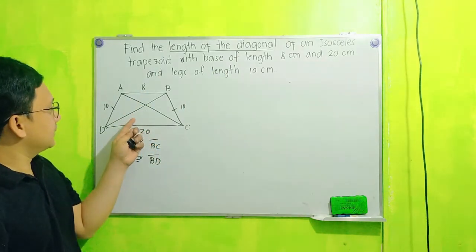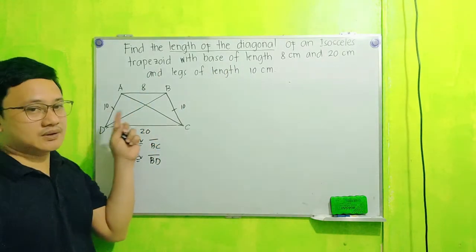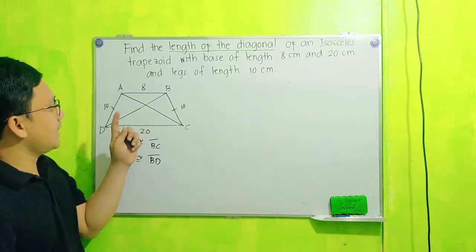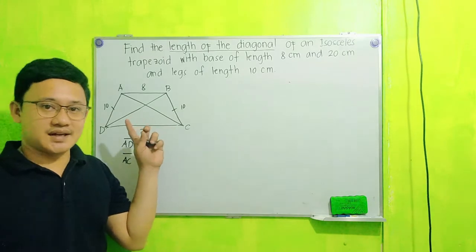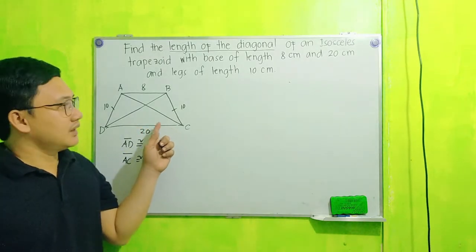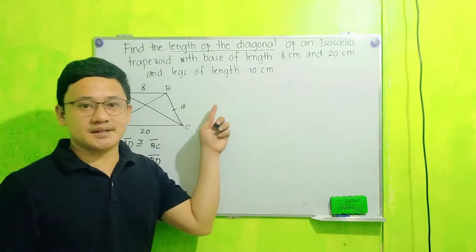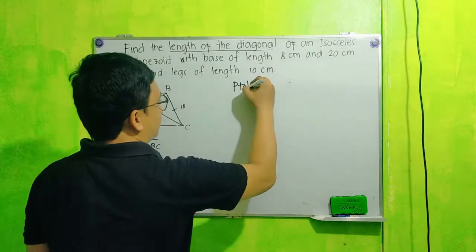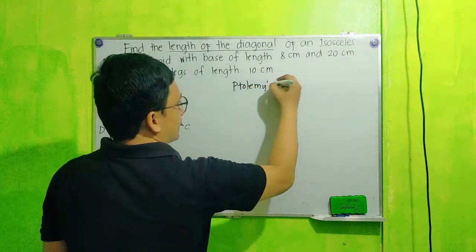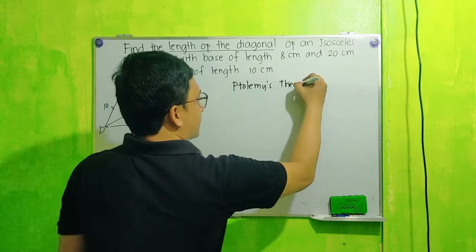Since this is a cyclic quadrilateral or this is an isosceles trapezoid, therefore it is a cyclic quadrilateral. Ibig sabihin it satisfies the Ptolemy's theorem. Ano ibig sabihin ng Ptolemy's theorem? So Ptolemy's theorem.